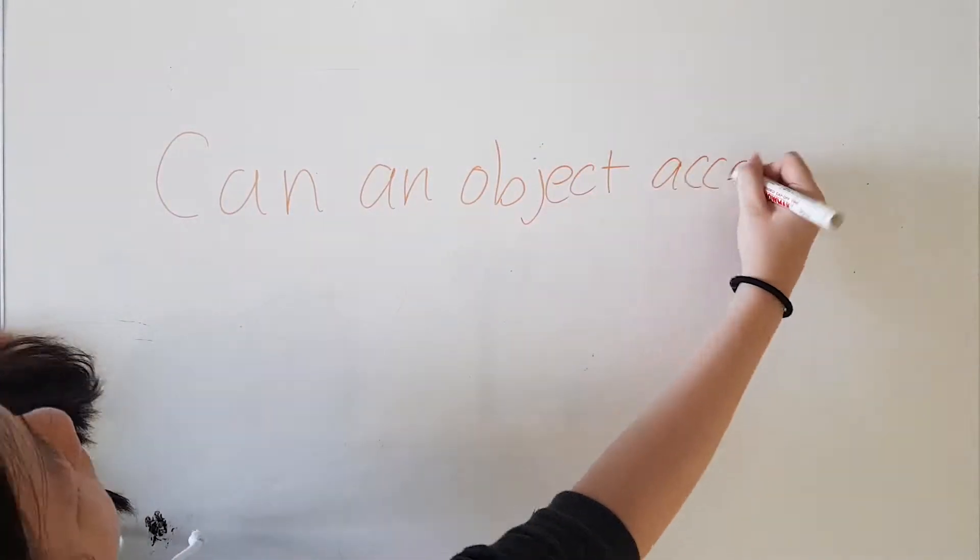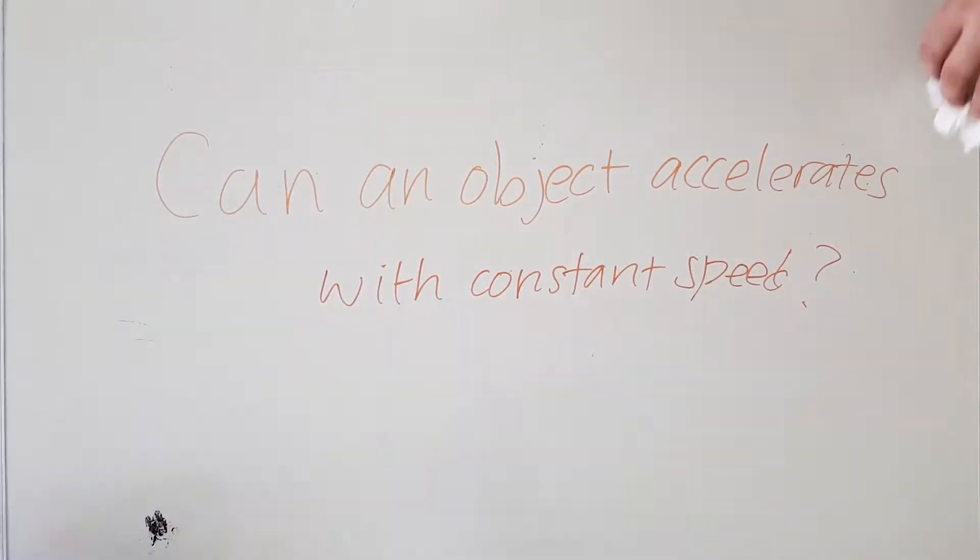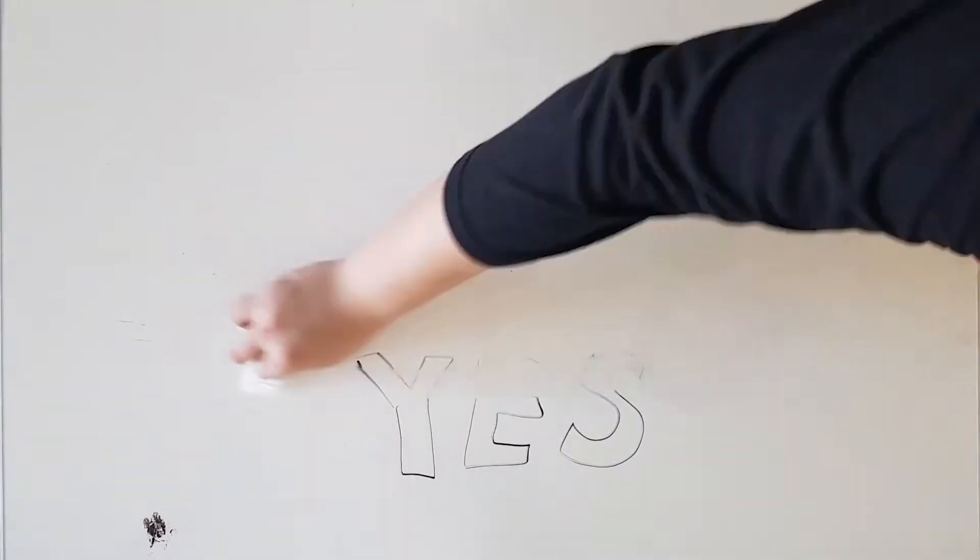Can an object accelerate if it's moving with constant speed? Yes. Many people find this counter-intuitive at first because they forget that changes in the direction of motion of an object, even if the object is maintaining a constant speed, still count as acceleration.